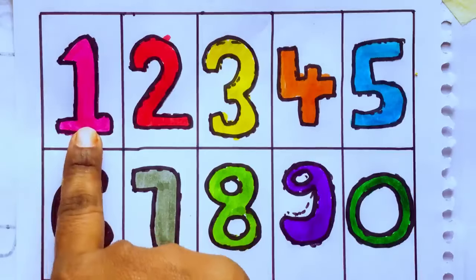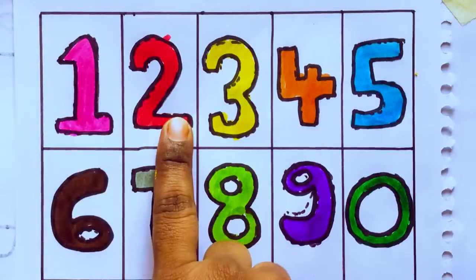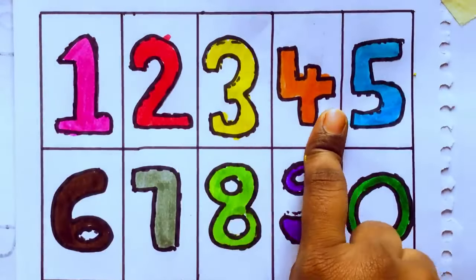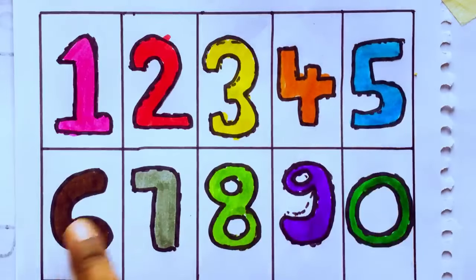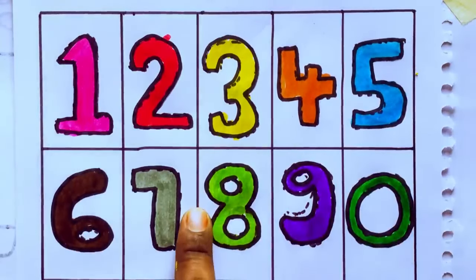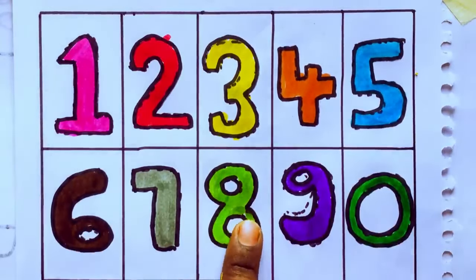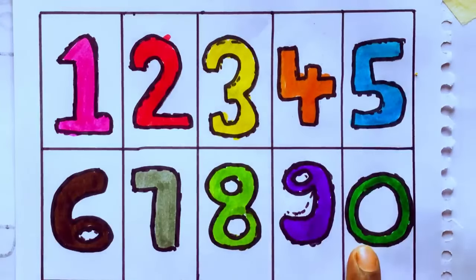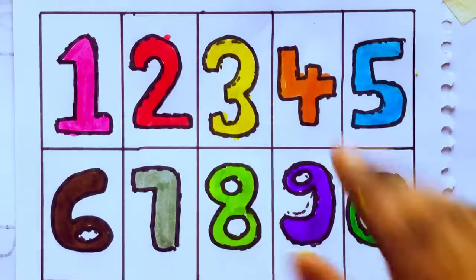Okay. 1, 2, 3, 4, 5, 6, 7, 8, 9, 0. Okay, bye kids.